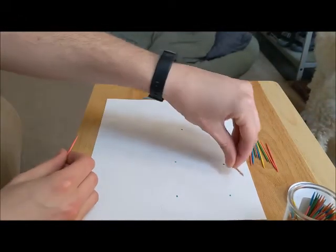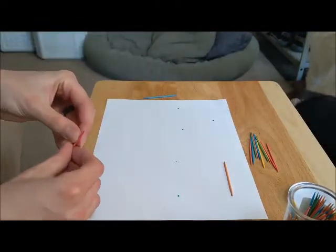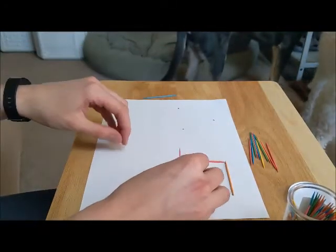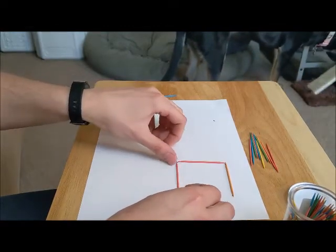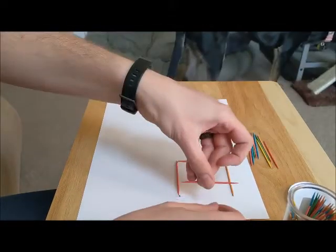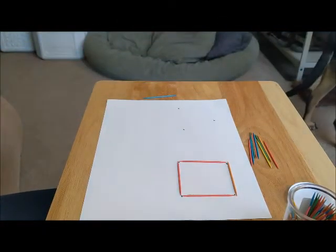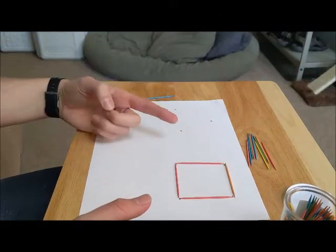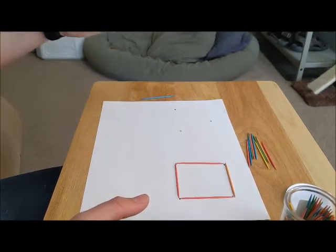So what your kiddo's job is now is you put the toothpicks on the dots to line up. Then once we're all done you should have a shape. Do any of my friends at home know what the shape is? That's right it's a square.